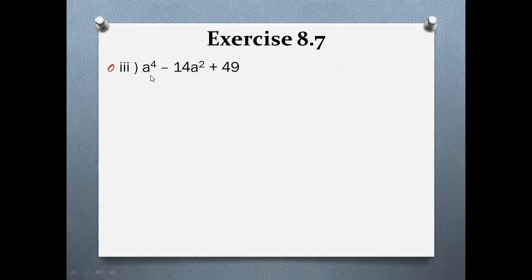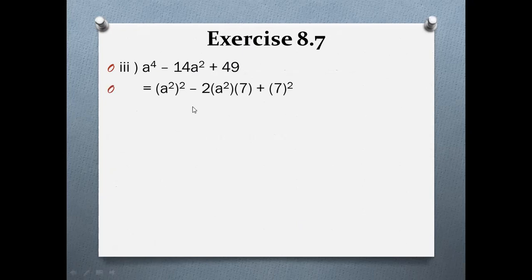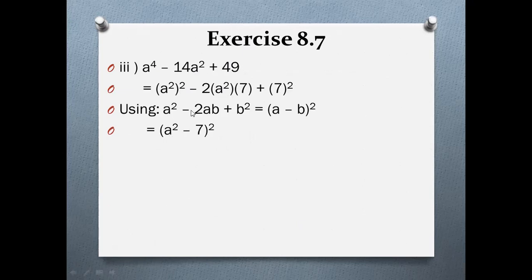Third part: a⁴ − 14a² + 49. a⁴ is the perfect square of a², and 49 is the perfect square of 7. The middle term: 2ab = 2 × a² × 7 = 14a². Confirmed. Using a² − 2ab + b² = (a − b)², with a = a² and b = 7, the answer is (a² − 7)².